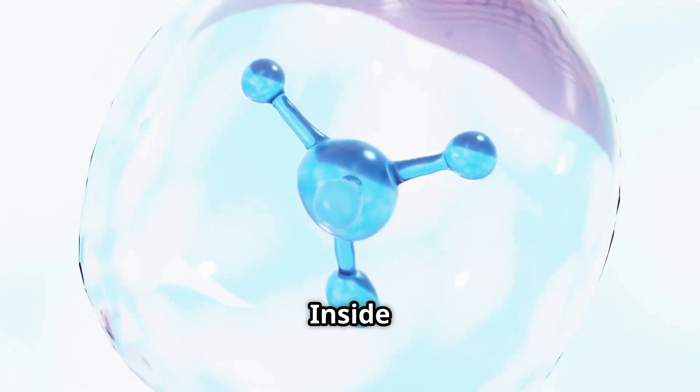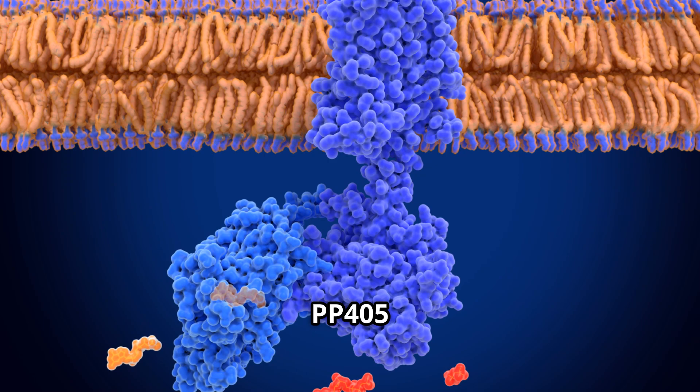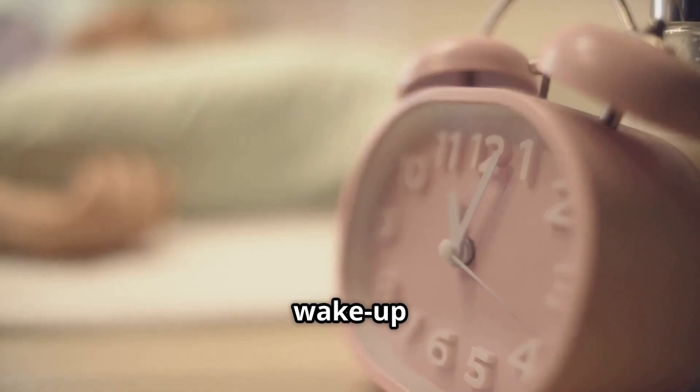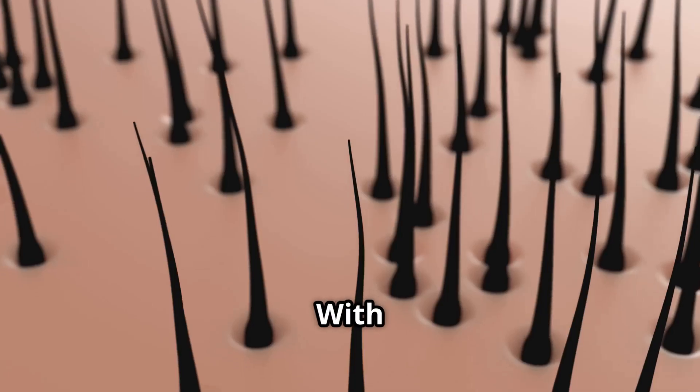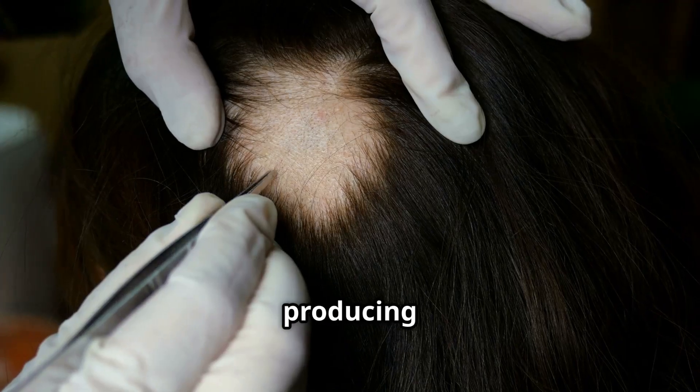So, how does it work? Inside your scalp, some stem cells are locked in sleep mode by a protein. PP405 targets this protein. Think of it as a wake-up call for your follicles. With the protein out of the way, those dormant cells can finally switch back on and start producing hair again.